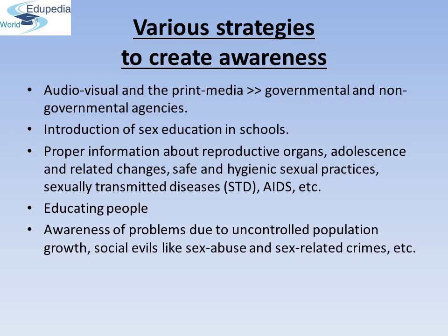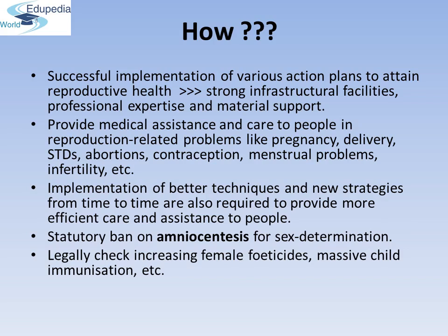How do various programs implemented by the government improve the reproductive health of the population? Successful implementation of various action plans to attain reproductive health requires strong infrastructure, professional expertise and material support. These are essential to provide medical assistance and care to people with reproduction-related problems like pregnancy, delivery, STDs, abortions, contraception, menstrual problems, infertility, etc.